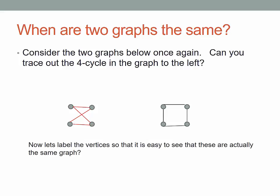So it's more obvious if we follow the tracing out using the red edges, that the graph on the left is a cycle on four vertices. And of course, the graph on the right is a cycle on four vertices. So they're the same graph.